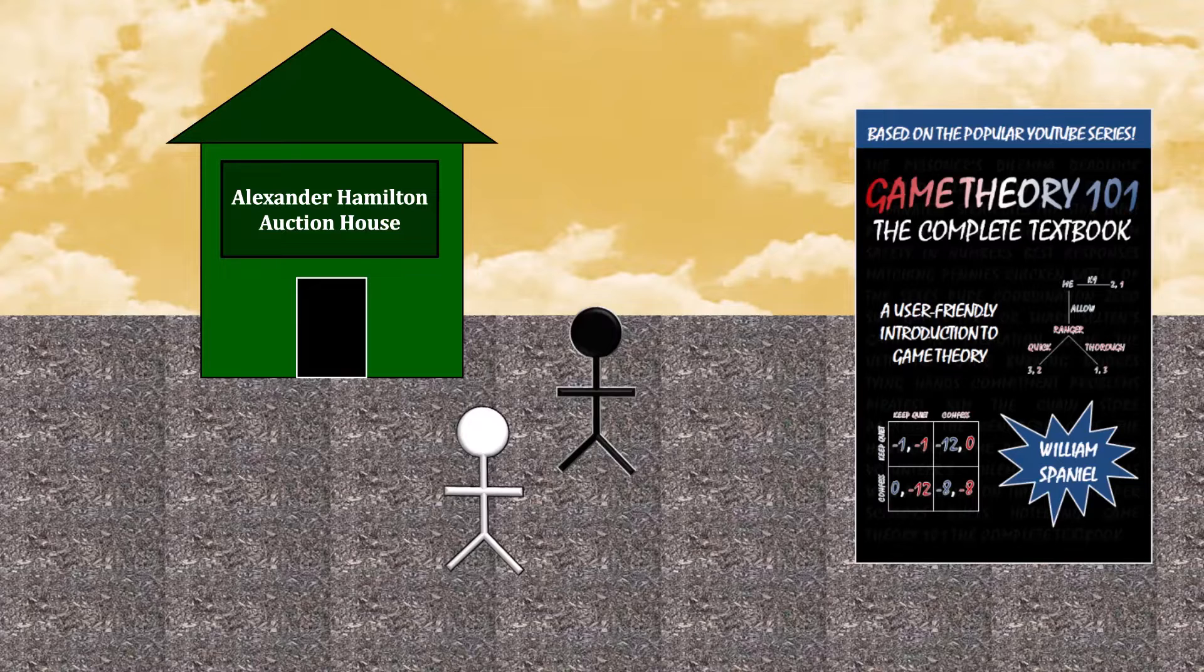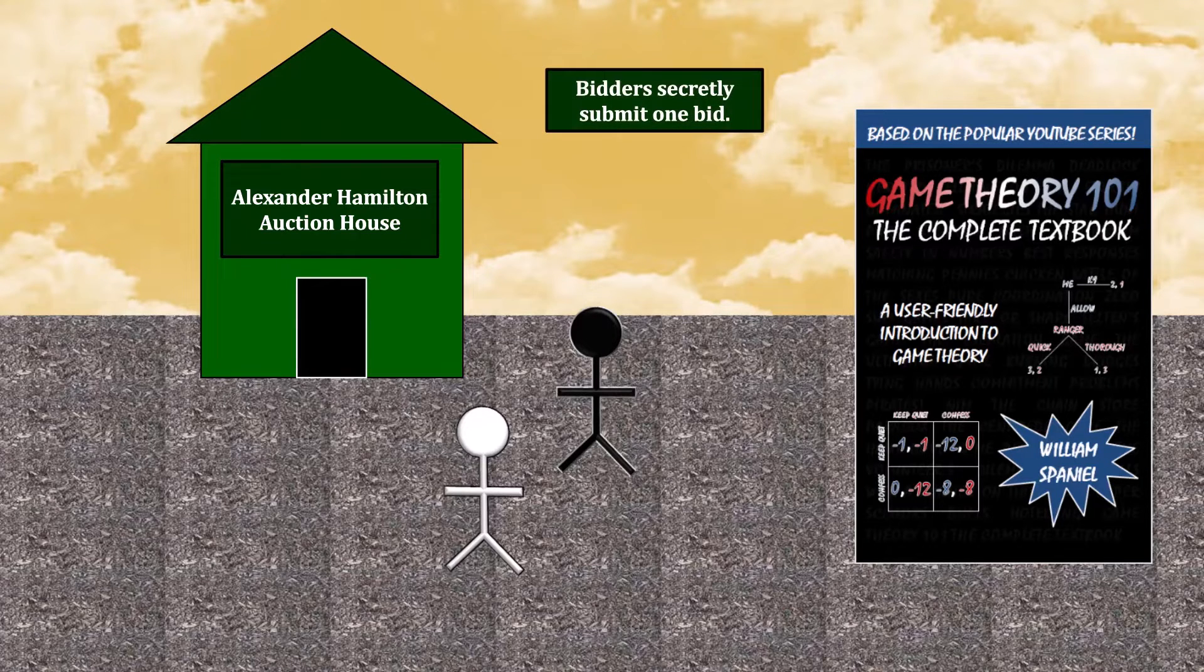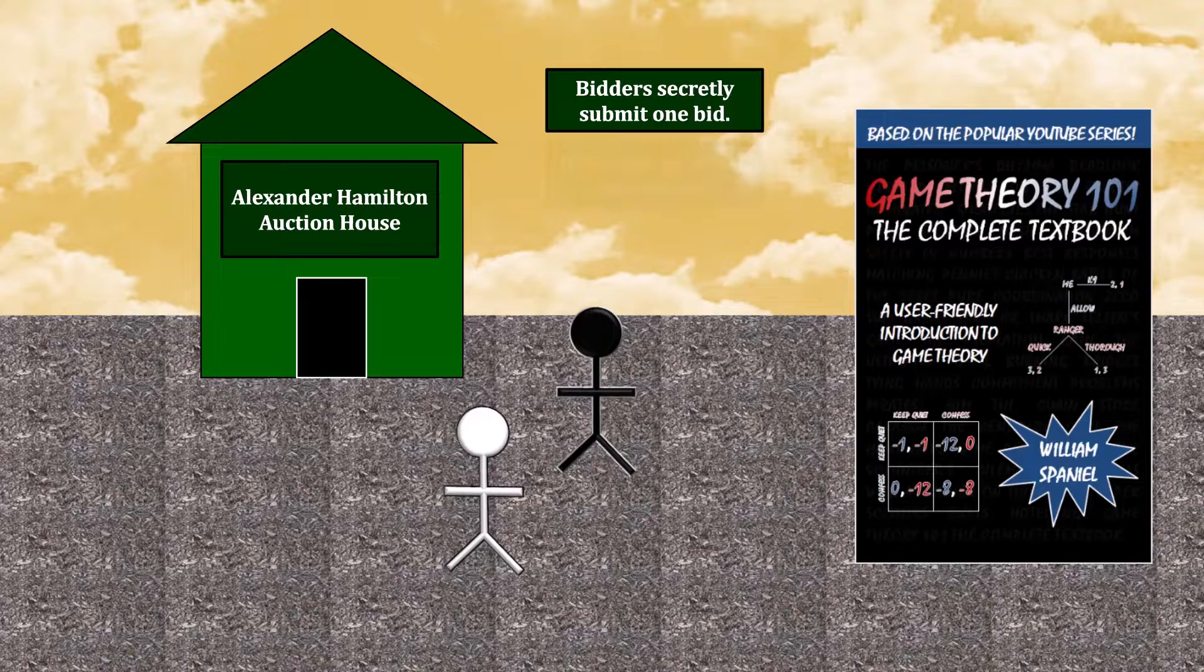But the Alexander Hamilton Auction House has specific rules on how they will allocate the book. Bidders in this auction secretly submit one bid, and that's all that happens. Those bids must be in $10 increments. This is the Alexander Hamilton Auction House after all.